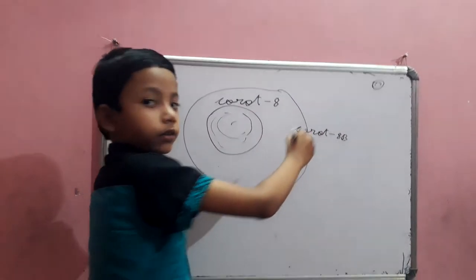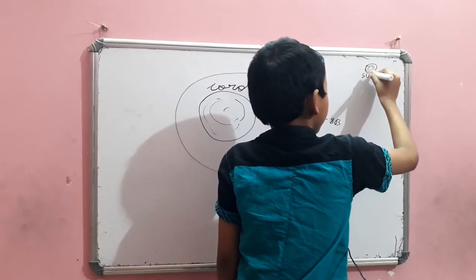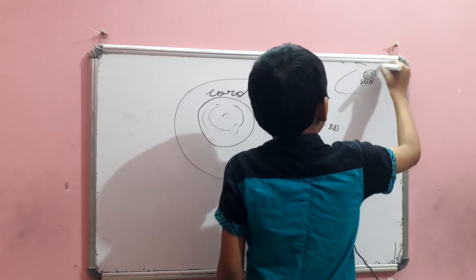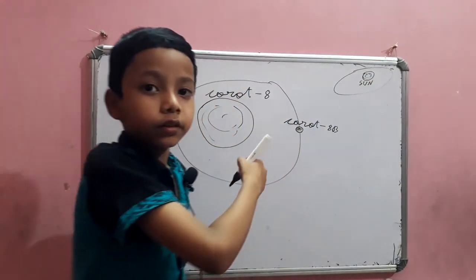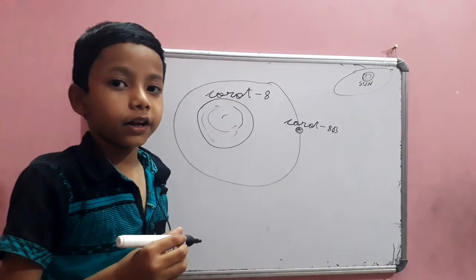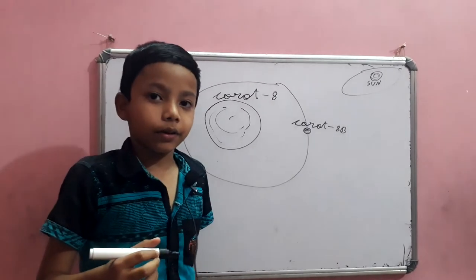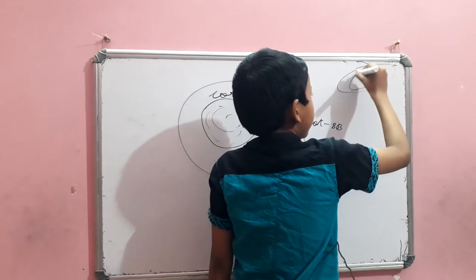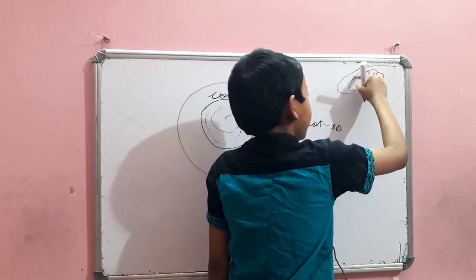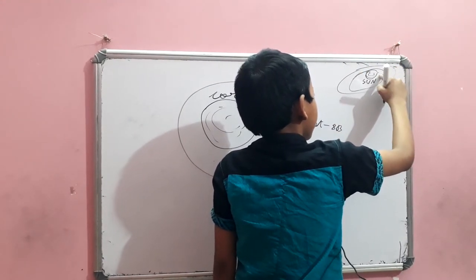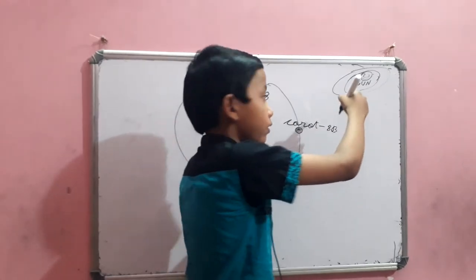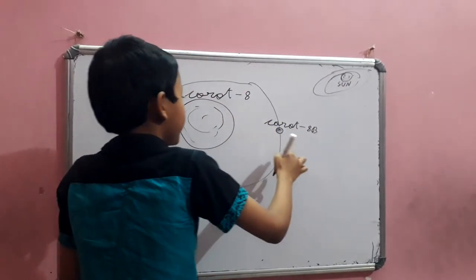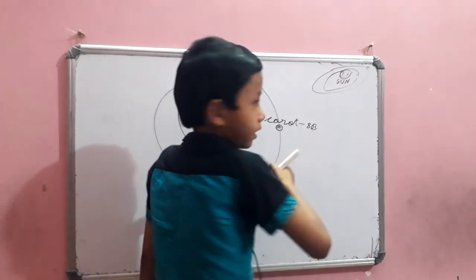Now, this is the Sun, and this is Corot-8. So the system's name is unknown. Let's call it the Corot-8 B system. This is the solar system. Wait, okay, sorry. So this is the solar system, and this is the Corot-8 B system, I guess.